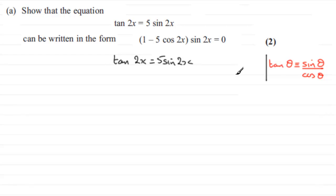And we can use that here, theta being the 2x, so we can say that therefore this is the same as sin 2x divided by cos 2x, and that's equal to 5 sin 2x. Now all I need to do is multiply both sides by cos 2x, and so therefore I get sin 2x equals 5 sin 2x times cos 2x.